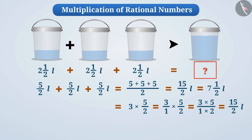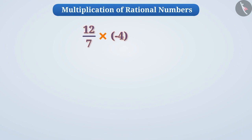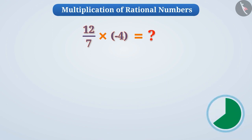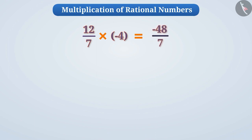That is, after mixing the water of three buckets, we will get seven and a half litres of water. So, tell me, if we have to find the result of twelve by seven into minus four, how will we do it? Think for a while. Absolutely right! We will multiply twelve and minus four to get the numerator of the result as minus forty-eight, and we will keep the denominator the same. That is, the result of the given multiplication will be minus forty-eight by seven.